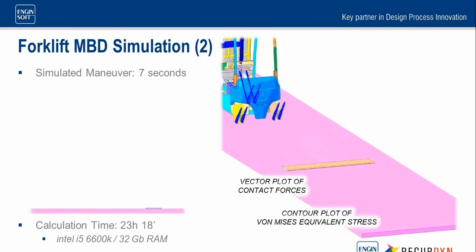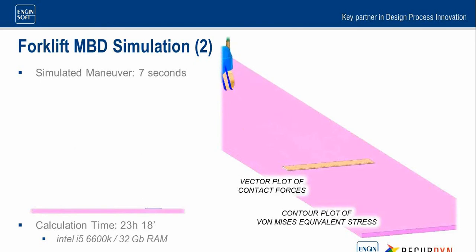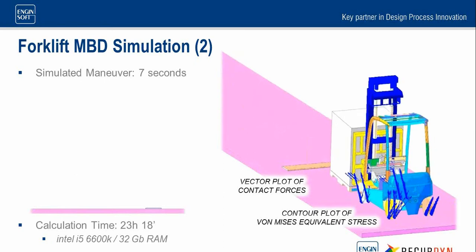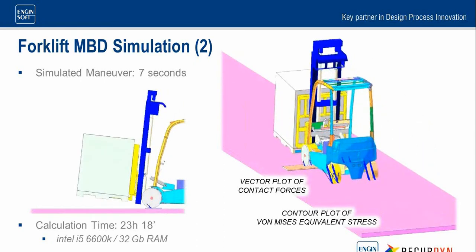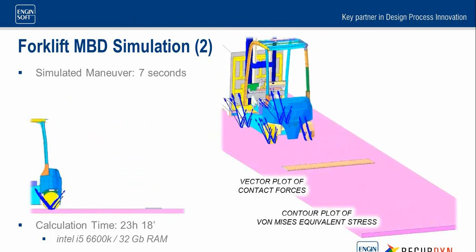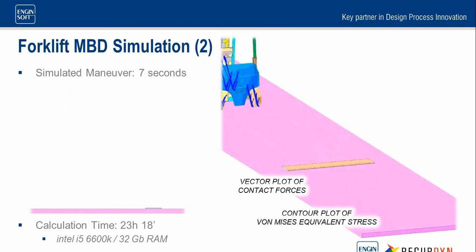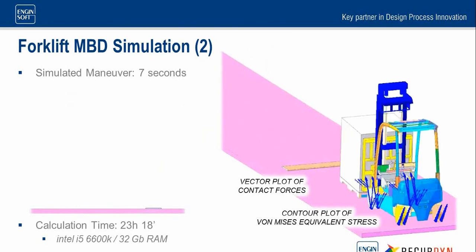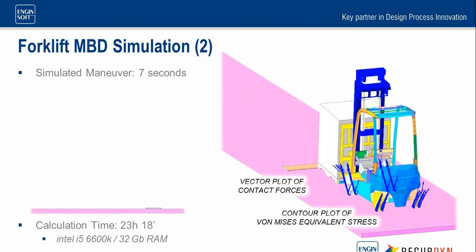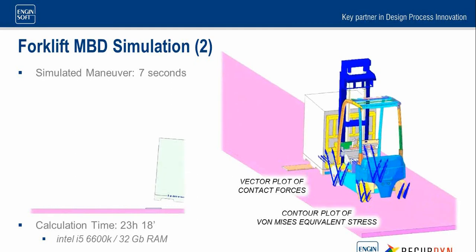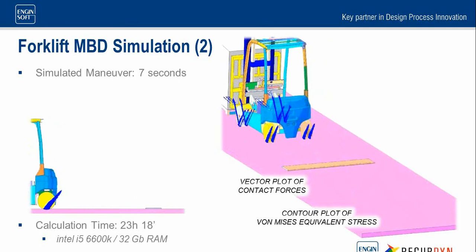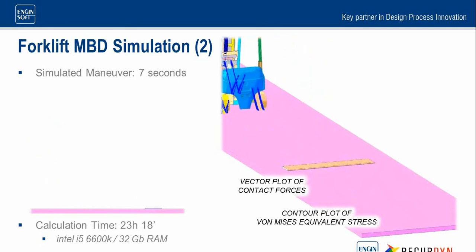Moreover, no convergence problems affect the RecurDyn multibody solver, so our model will always finish the simulation without any unwanted stop. We can analyze the Von Mises equivalent stress over the mast deformed bodies, and at the same time observe how the flexibility influences the forklift dynamics. In particular, the flexible mast has produced an increase in the freight shakes, while the forklift loads have slightly decreased.